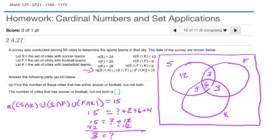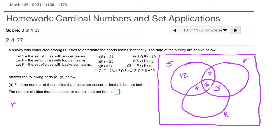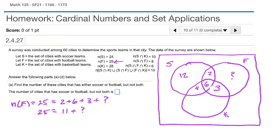Now we can figure out the remaining regions for F and K. For F, we're given a total of 25 cities. That set includes the 2, the 6, and the 3 we already know, plus the unknown football-only region. So 25 equals 2 plus 6 plus 3 equals 11, plus the unknown. Subtracting 11 from each side leaves us with 14 in the football-only region.